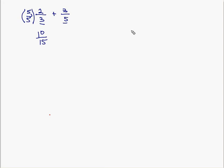Doing the same thing for three-fifths, I'm going to multiply that denominator by three, and once you multiply the denominator by three, you multiply the numerator by three as well. So we're multiplying that second fraction by three over three — another form of one. Three-fifths now becomes nine-fifteenths. When you add fractions together you need a common denominator, then you simply add the two numerators together. Ten plus nine gives us an answer of nineteen-fifteenths.